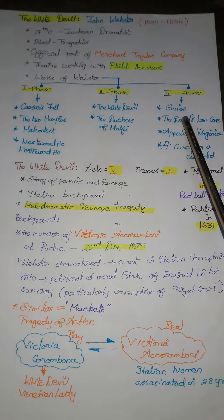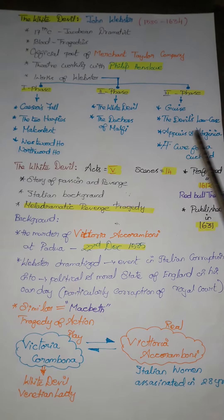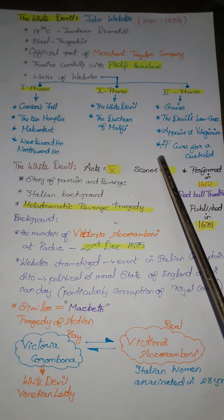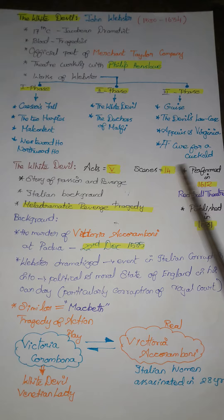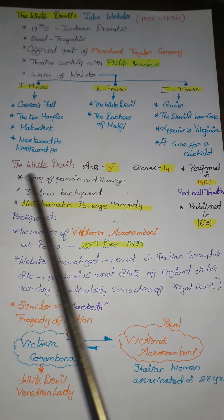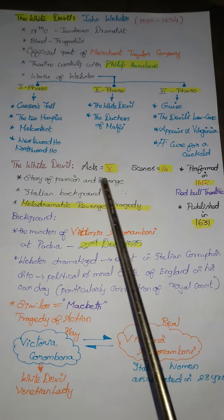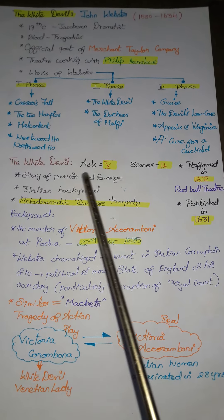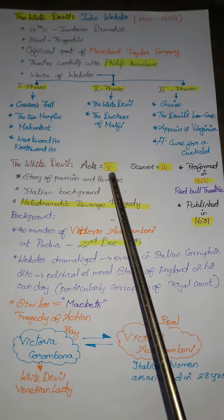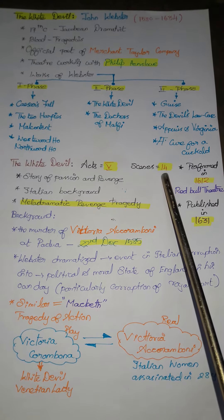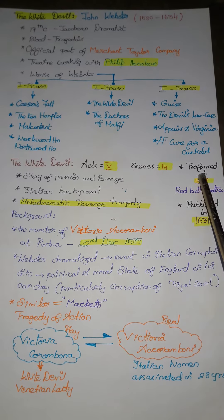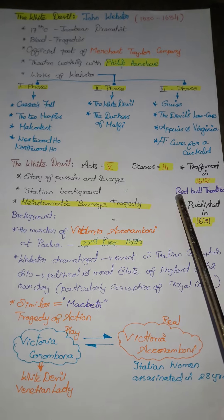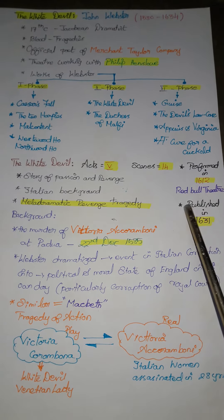In the 3rd phase we have Guise, The Devil's Lockies, Appius and Virginia, and A Cure for Clockwood. The White Devil is a drama, a tragedy, composed of 5 acts and 14 scenes, and it was performed in 1612 by Red Bull Theatre.